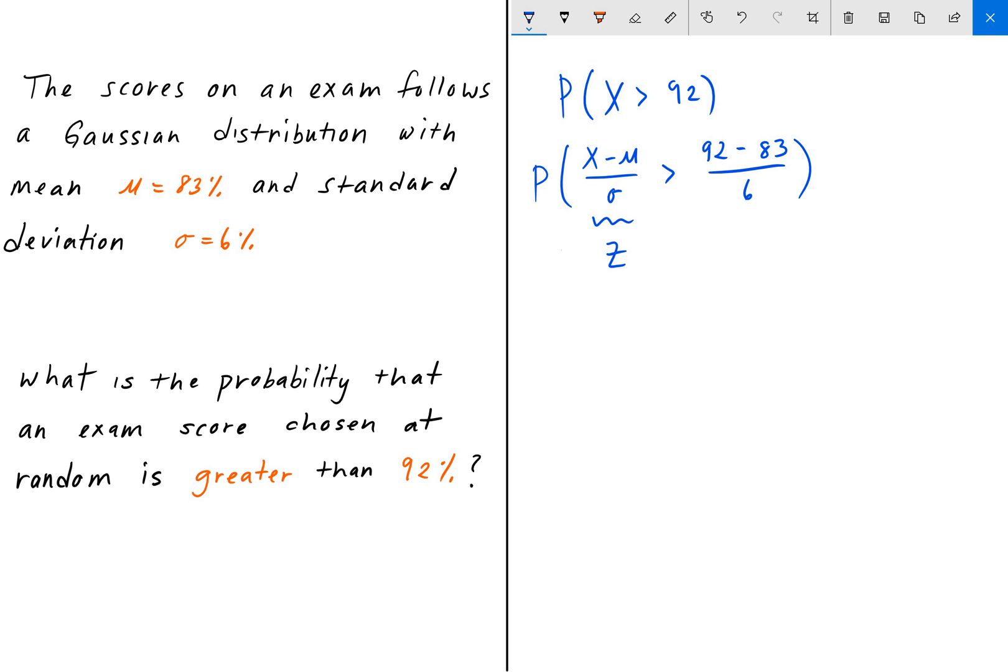And so now we have the probability that z is greater than 1.5. So we just normalized our distribution, and now all we have to do is find the value 1.5 in our table.